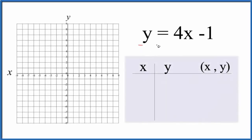Let's graph the linear equation y equals 4x minus 1, and we're going to do it two ways. We'll use a table of values here, and then we'll check our work with slope-intercept formula.